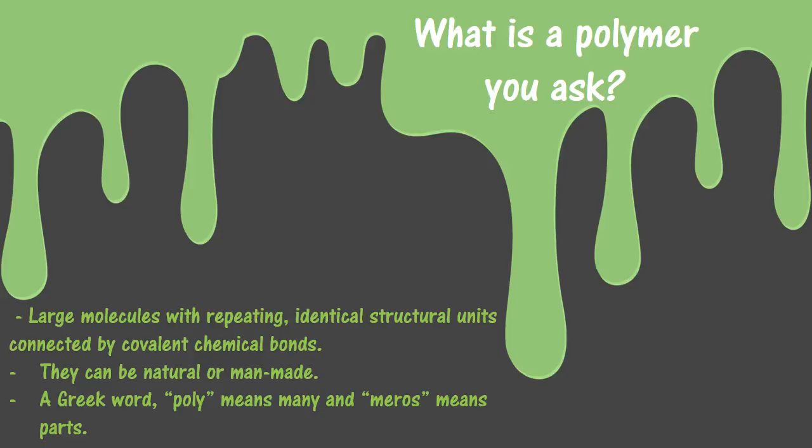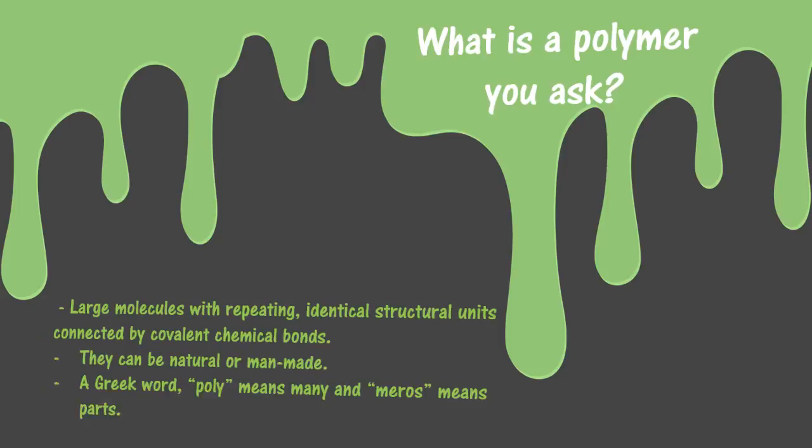So, what's a polymer? A polymer is large molecules made of repeating identical structures that are connected by covalent chemical bonds. They can be natural or man-made, and it's actually a Greek word — poly means many, and meros means parts. So, many repeating identical structures.